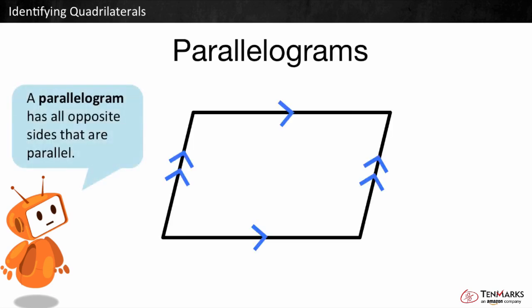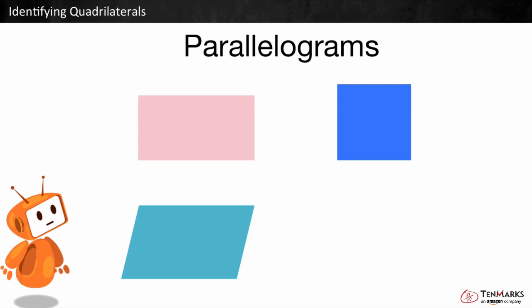Here's an example of a parallelogram. All opposite sides are parallel. Squares, rectangles, and rhombuses are all parallelograms, meaning the opposite sides are parallel.